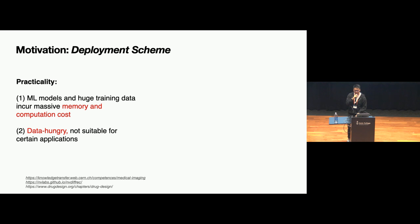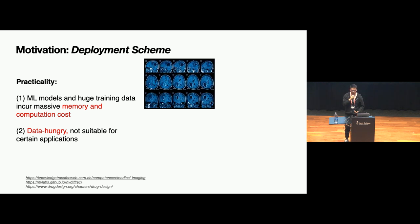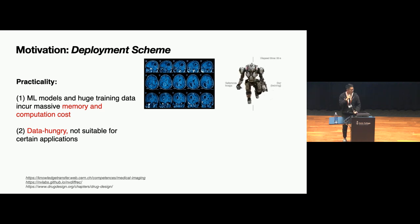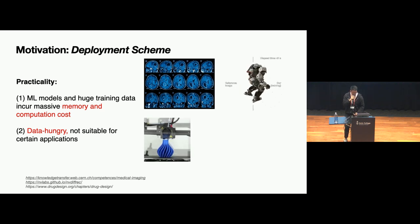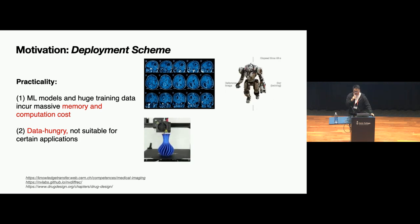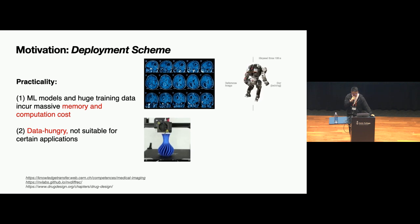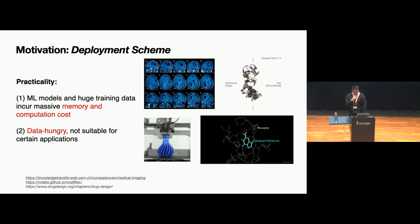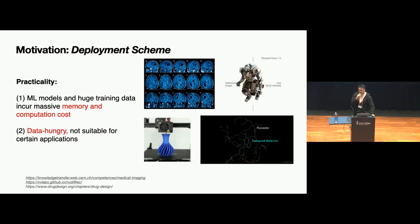Even if we have these resources, it's simply not possible sometimes to collect this kind of data. For example, for certain applications — as we have seen in previous presentations — such as medical imaging, 3D vision, 3D printing, where we need to get different properties for optimization in civil engineering, and AI for science applications such as drug discovery. All of these applications can be very hard to collect data for.